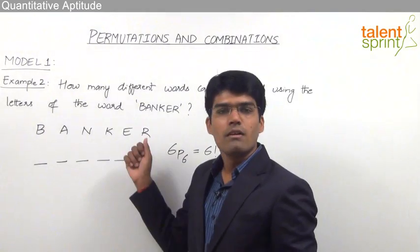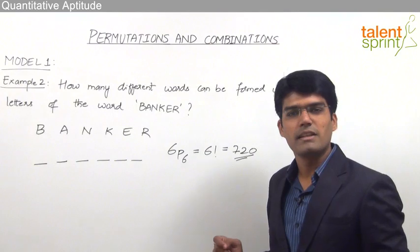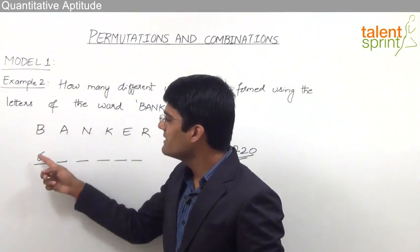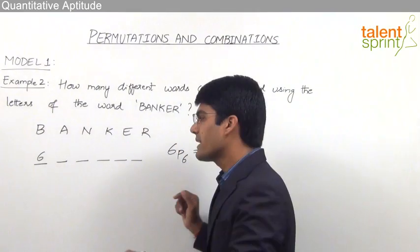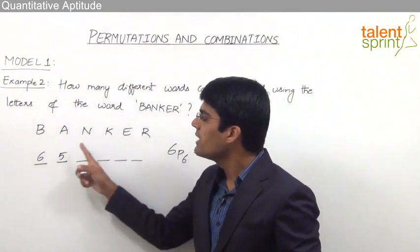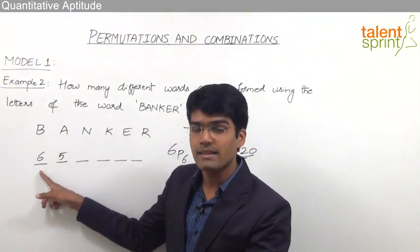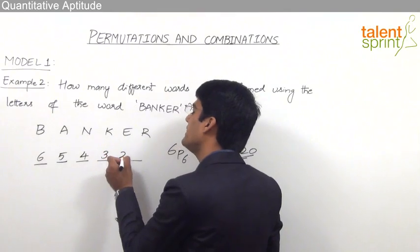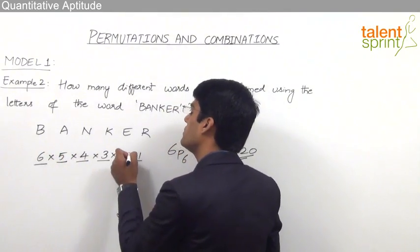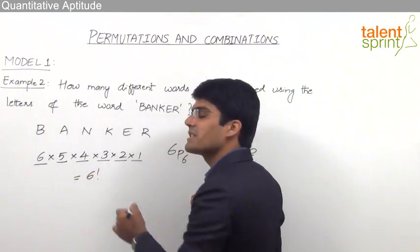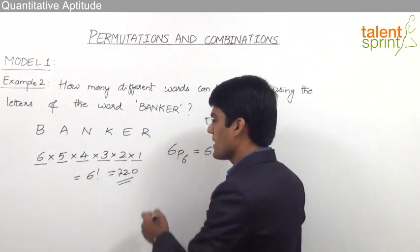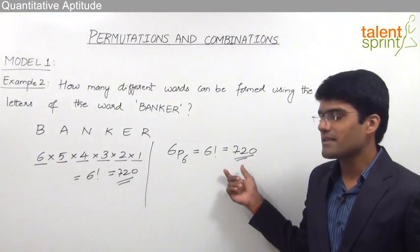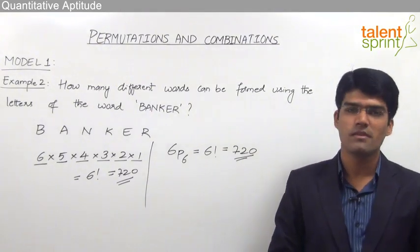Using the principle of multiplication: the first position can be occupied in 6 ways, the second in 5, the third in 4, and so on down to 1. Altogether 6 into 5 into 4 into 3 into 2 into 1 equals 6 factorial, which is 720. So whether using nPr or the principle of multiplication, we get 720 different words from the letters of BANKER.